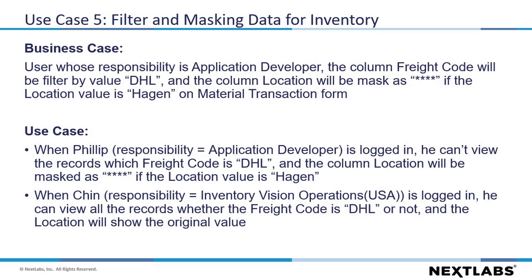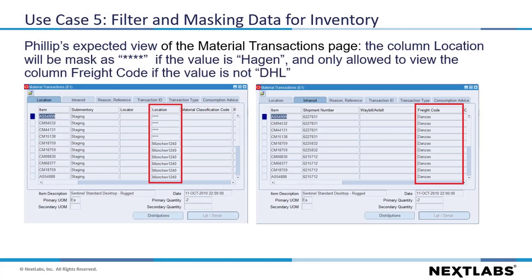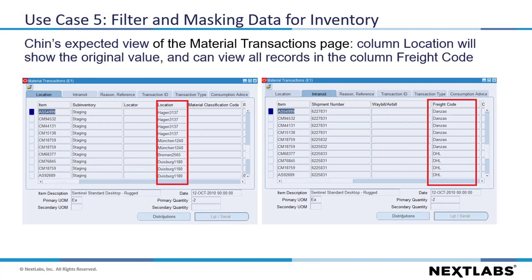In the last use case, we will cover how to filter and mask inventory data based on policy. For this use case, if the user's responsibility is Application Developer, the column freight code will be filtered by value DHL, and the column location will be masked as asterisk if the value is Hagen on Material Transaction. The users Philip and Chin will be used in this use case. Before we move into the demo, let's review the policy details and expected results. These are the policy details. Here is the expected material transactions view for Philip. This is the expected material transactions view for Chin.